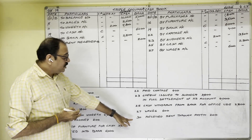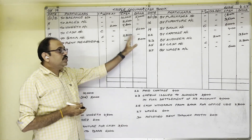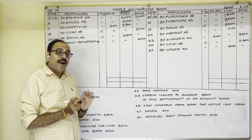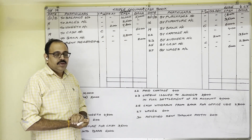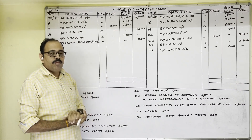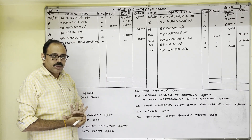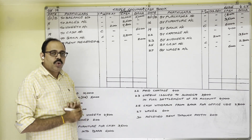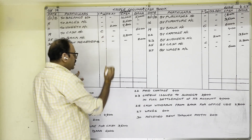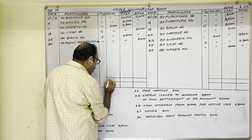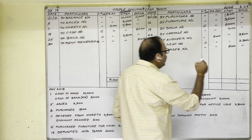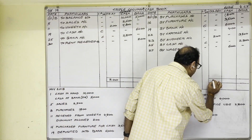All transactions have been posted in the cash book. The next step is balancing. Discount columns are memorandum columns — we should not balance them, only total them. Debit total is 200 rupees and credit total is 200 rupees.